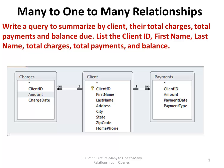Let's look at an example of a many-to-one-to-many relationship using an outer join. We want to write a query to summarize, by client, their total charges, total payments, and balance due. We want to list the client ID, the first name, the last name, the total charges, the total payments, and the balance.